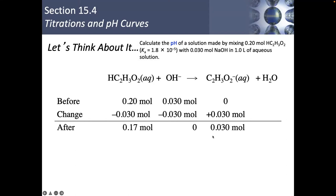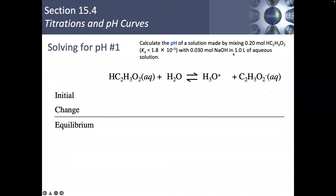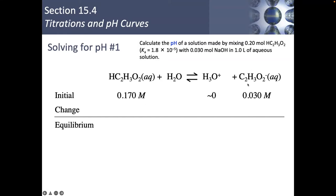Now I can think about the equilibrium. Having dealt with the stoichiometry, I can now look at an ICE diagram. Keep in mind it says one liter of aqueous solution, so I don't actually have to convert these to molarity — dividing by one liter gives the same numbers. So I have 0.170 M acetic acid, basically 0 for OH⁻, and 0.030 M acetate ion. At equilibrium I'm losing acetic acid and gaining H⁺ and acetate.